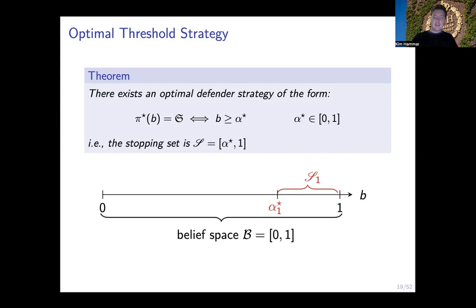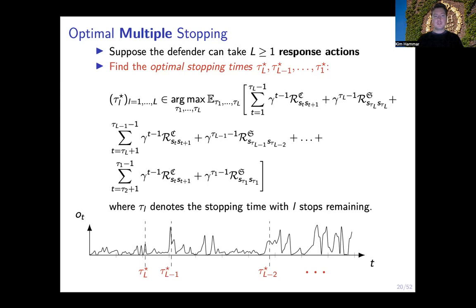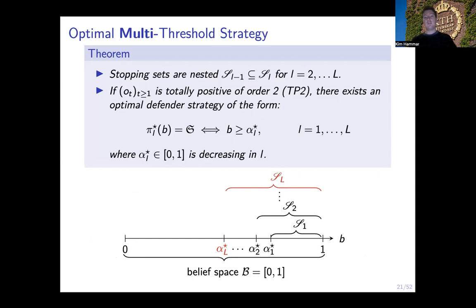In practice, we do not want to block the gateway whenever we suspect an attack. Ideally, we would like to respond to the intrusion much earlier — before we have to block the gateway. Suppose now that the defender can take L response actions instead of one, where L could be in the tens, hundreds, or even thousands. In this case we have a problem of optimal multiple stopping rather than optimal stopping, and the goal of the defender is to find L stopping times instead of one.